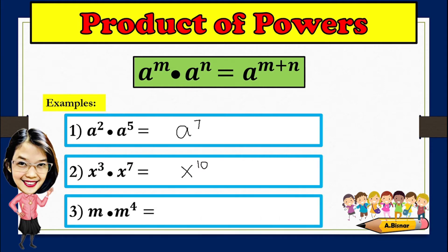For number 3, m times m to the fourth power. Again, look at the bases if they are the same. Since they are the same, let's just copy m and add its exponents. However, m has an exponent which is 1, but if the exponent is 1, you don't need to write it — you just have to keep in mind that there is a 1 there. So 1 plus 4 is equal to 5, and the answer will be m to the fifth power.